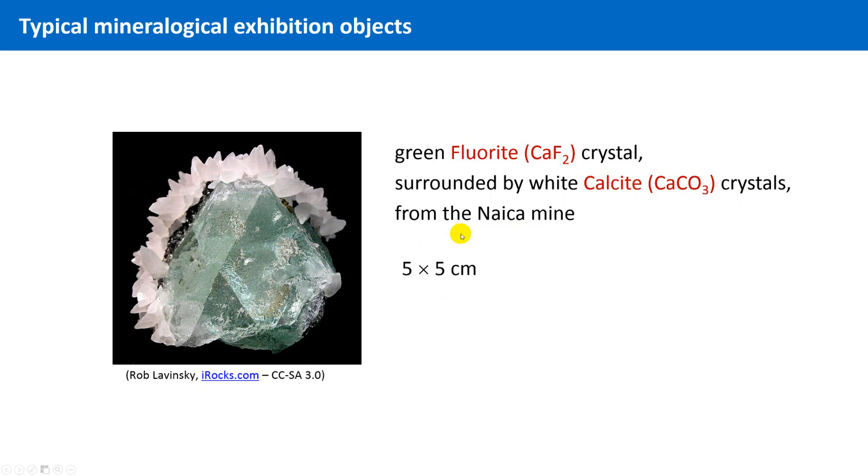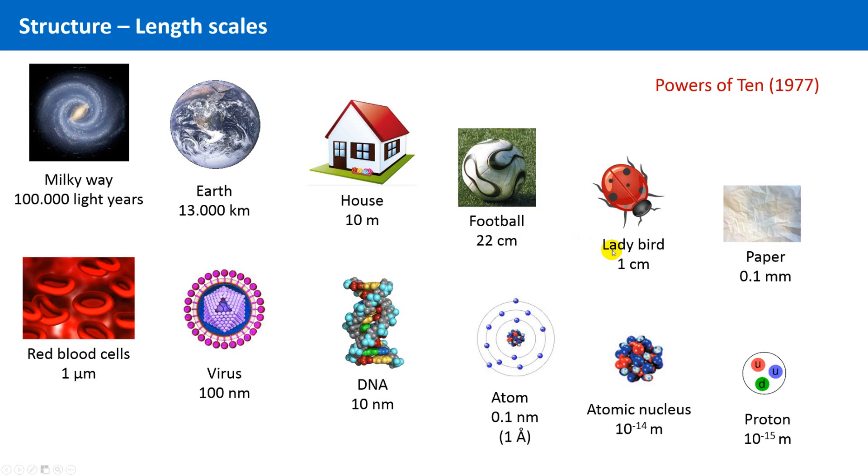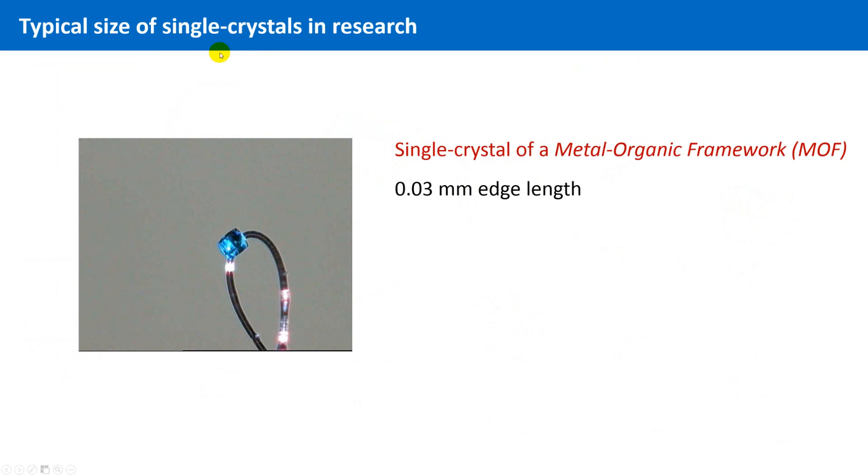Let's switch back again, and go further down on this scale, then we reach a dimension of the thickness of a sheet of paper, a tenth of a millimeter. And this is the typical size of single crystals in research. Here you can see a nice blue sparkling crystal of a so-called metal-organic framework. It is placed here on a nylon loop, because it is being prepared for an x-ray experiment, in order to solve the structure of this specimen.